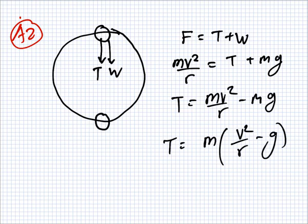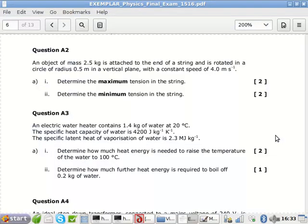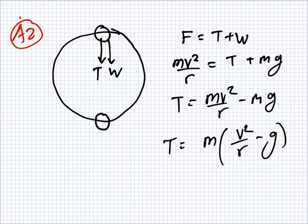Okay, so I'll put the numbers in now. What's the m? 2.5. Okay, and then what's the... It's for the minimum one. What's the v? It's 4, isn't it? Yes. And the radius? 0.5. And the g? 9.5.